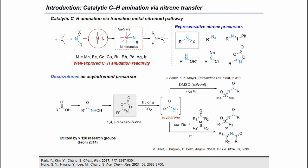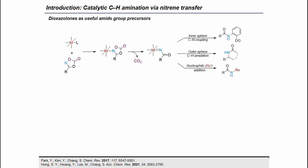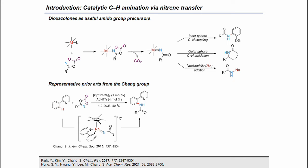Dioxazolones are one of the emerging amido precursors that can be easily synthesized from the corresponding carboxylic acids in two steps. Historically, their acyl nitrinoid transfer reactivity was discovered in 1968 to form sulfoximines under harsh reaction conditions. Later in 2014, Bohm and co-workers used photochemical reaction conditions to achieve similar outcomes. In our group, we are trying to use dioxazolones for catalytic CH amination reactions, and indeed in 2015 we reported a rhodium-catalyzed C–N bond coupling reaction of arenes by an inner-sphere-type mechanism.